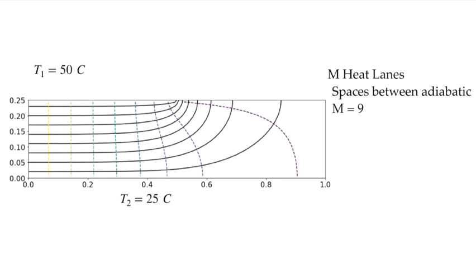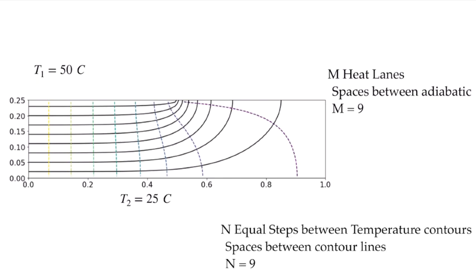Once I've drawn these lines, I can count the number of spaces for little bits of heat transfer to pass through: one, two, three, four, five, six, seven, eight, nine. I'm going to call that m. There are m spaces between the adiabats, and in this case m equals nine. I can also count the spaces between the contour lines. These are evenly spaced contour lines with the same delta T between each line, while the adiabats are equally spaced over the area where heat transfer comes in. Counting those spaces, I also get nine, so n equals nine.